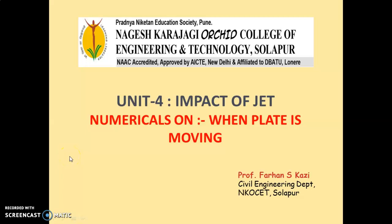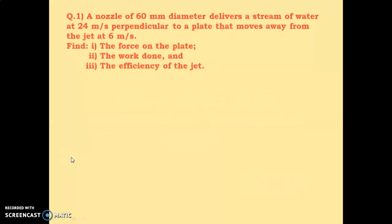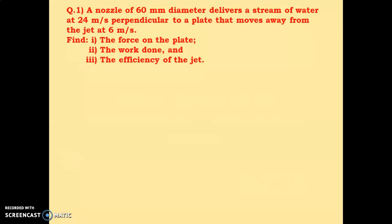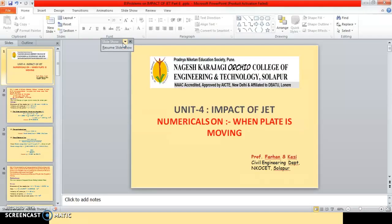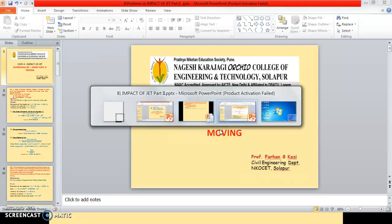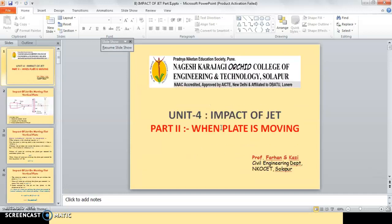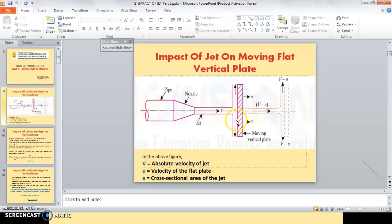Good morning. Today we are going to see numericals on impact of jet on moving plates. The first problem: a nozzle of 60 millimeter diameter delivers a stream of water at 24 meter per second perpendicular to a plate that moves away from the jet at 6 meter per second. This is an example of impact of jet on a moving flat vertical plate.